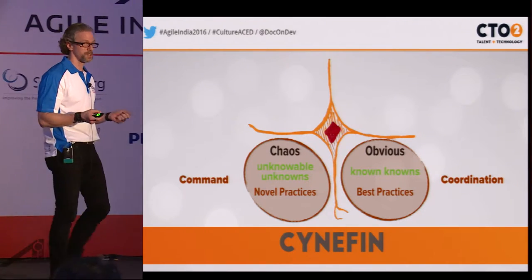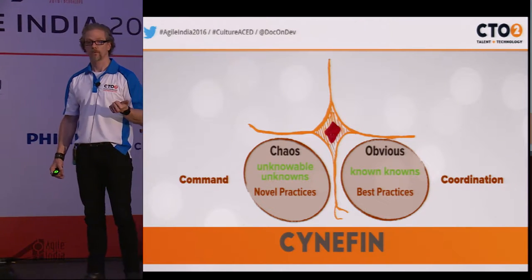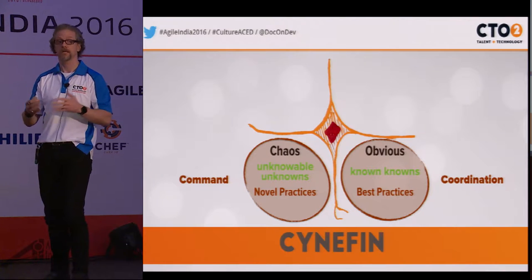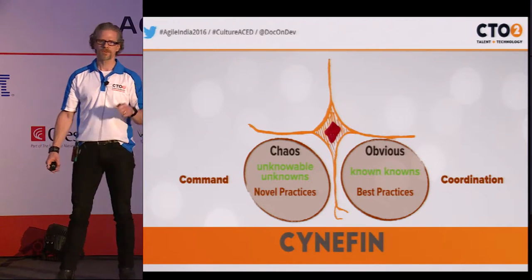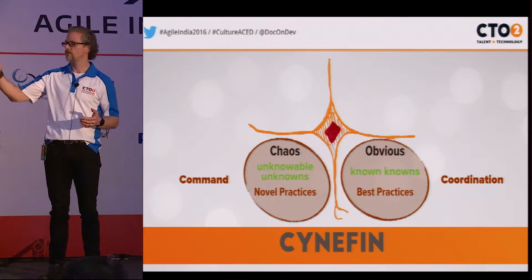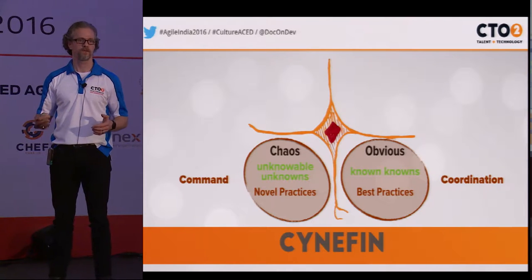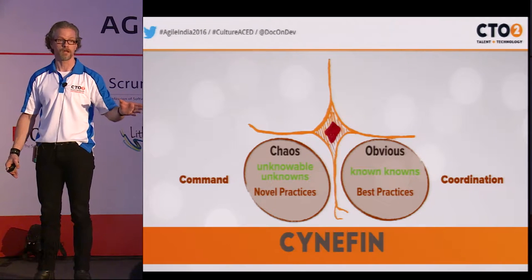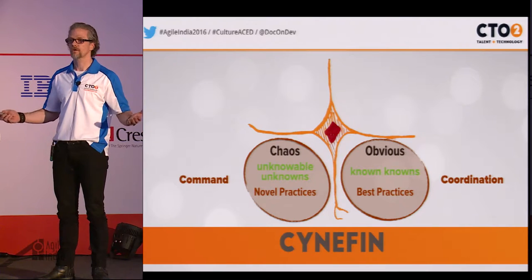We look at these two domains and see some challenges. We know coordination is where most of our management knowledge came from, and not much has changed in 100 years. The chaos domain is where stories of heroes come from — Steve Jobs returning to Apple when they were two months from bankruptcy. He came in and did crazy things to save the company. But these aren't where we exist, yet this is where all of our stories and lessons come from.